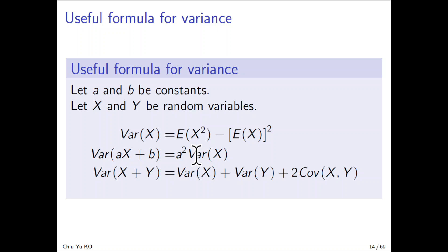If you shift the random variable, it doesn't really change the variance. But if you scale up or scale down X, then the variance will scale squared because we square it. That's why it's not a but a².